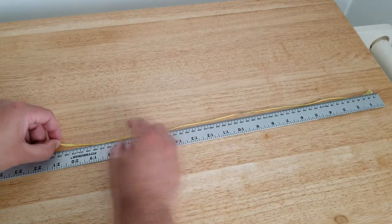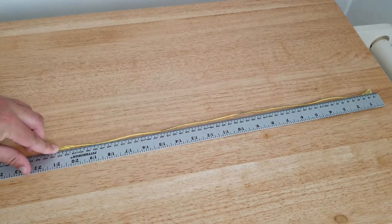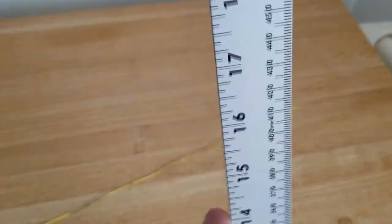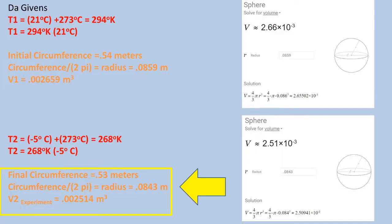Now let's go back to the experiment when measuring the circumference of the balloon after being at negative five degrees Celsius for an hour. We get a circumference measured of 0.53 meters. Taking the circumference over two pi and plugging it into the volume formula, we get a volume of 0.002514 meters cubed for our experimental value.